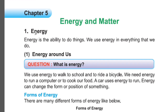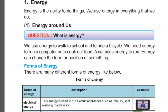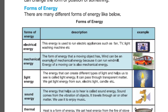Energy and Matter. Energy is the ability to do things — we use energy in everything that we do. What is energy? We use energy to walk to school and to ride a bicycle. We need energy to run a computer or to cook our food. A car uses energy to run. Energy can change the form or position of something.